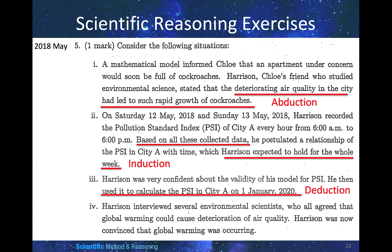Harrison was very confident about the validity of his PSI model, and then used it to calculate the PSI in the city on January 1st, 2020. This is deduction, because based on the model he tried to predict what would happen. Harrison then interviewed several environmental scientists who all agreed that global warming would cause deterioration of air quality, and Harrison became convinced that global warming was occurring. This is none of the above — these two statements do not really have a causal relationship.